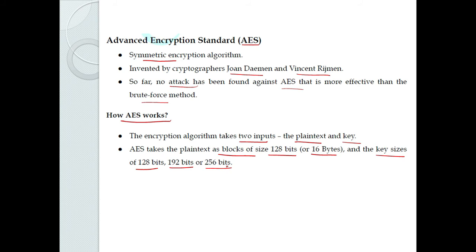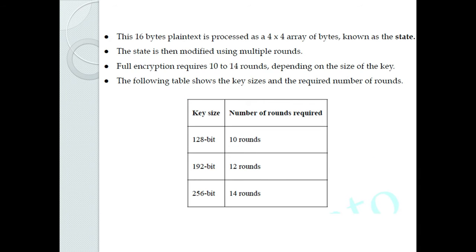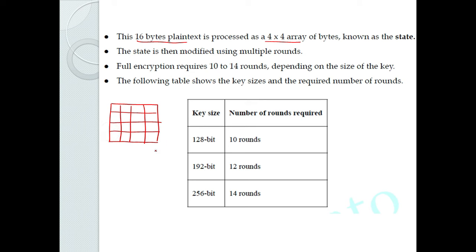The blocks of plaintext are represented as a 4x4 array, which represents 16 bytes of plaintext. We use a 4x4 array of bytes — just like a matrix — with 4 rows and 4 columns, giving 16 cells total. Each cell holds 1 byte of data. This representation is known as the state.